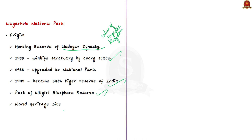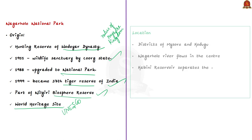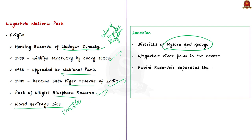Nagarhole National Park is also part of the Nilgiri Biosphere Reserve and is a UNESCO World Heritage Site. It is situated in the Mysore and Kodagu districts of Karnataka. The Nagarhole River flows through the center of the park and joins the Kabini River, which is a tributary of River Kaveri. The park is located northwest of Bandipur National Park, with the Kabini Reservoir separating the two national parks.